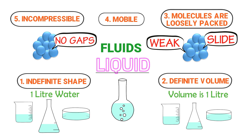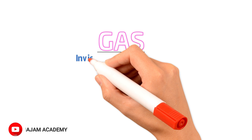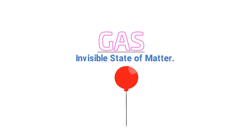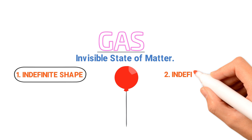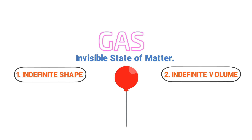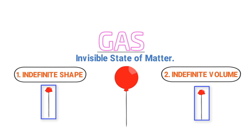At last, let me teach you the third state of matter: gas. Usually, gas is the invisible state of matter. For example, a balloon filled with ammonia gas, or the air surrounding us. The first property of gas is that gases have indefinite shape. Secondly, gases also have indefinite volume. For example, consider that suddenly this balloon bursts. All the ammonia gas will escape from it and mix up with the air surrounding us. Thus, both the shape and volume of the ammonia gas changed.